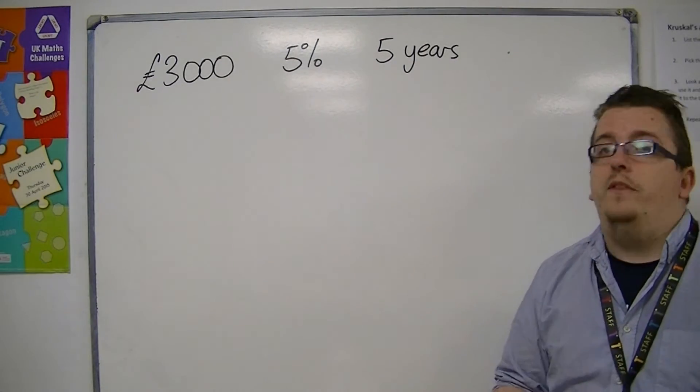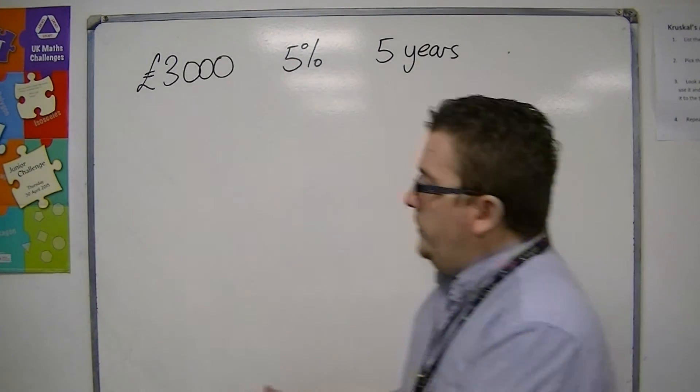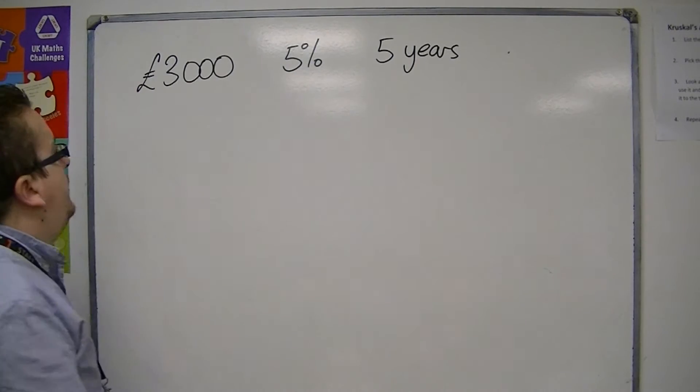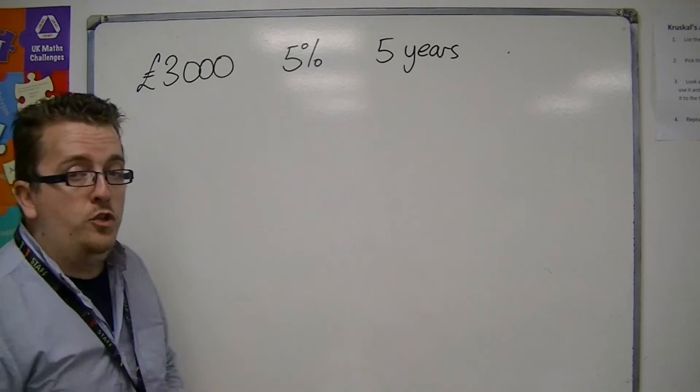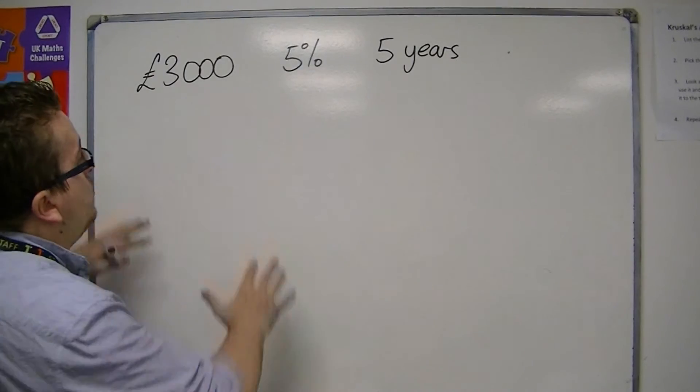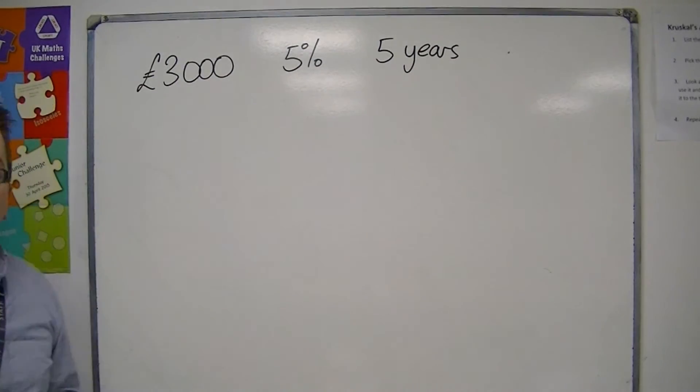Simple interest is much easier to work with, that's why it's called simple. And the way it works is that if I wanted to work out how much interest I was going to make, I would multiply these three quantities together.